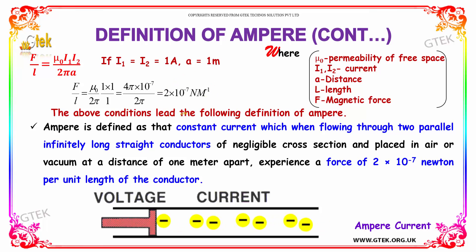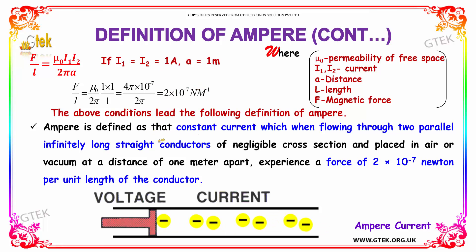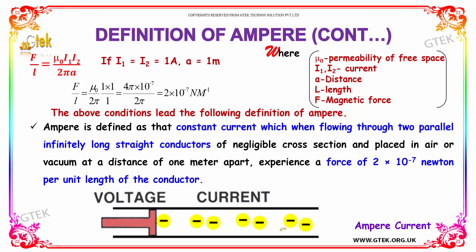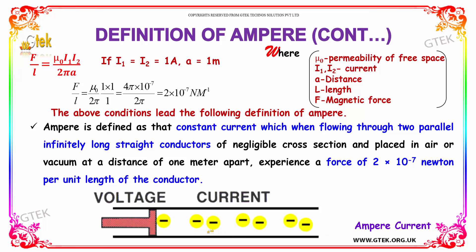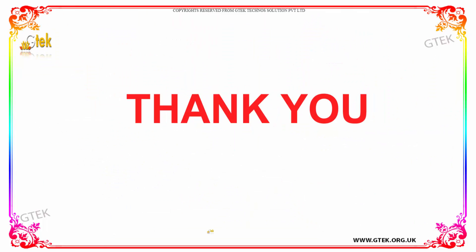This is referred to as ampere. Ampere is defined as the constant current which, when flowing through two parallel infinitely long straight conductors of negligible cross-section and placed in air or vacuum at a distance of 1 meter apart, experience a force of 2 into 10 to the power minus 7 newton per unit length of the conductor. This is the definition of ampere.